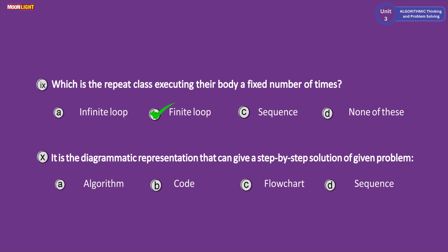Question ten: which is a diagrammatic representation giving a step-by-step solution to a given problem? The options are: A algorithm, B code, C flowchart, D sequence. The correct answer is option C, flowchart. A flowchart is a diagrammatic representation that uses symbols, arrow lines, diamond shapes, and rectangles.